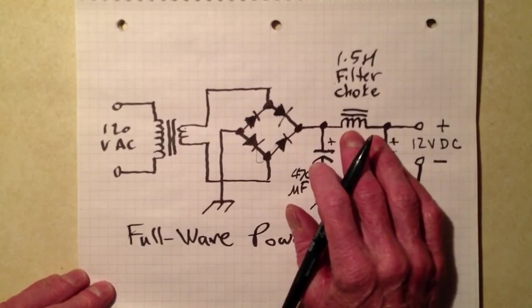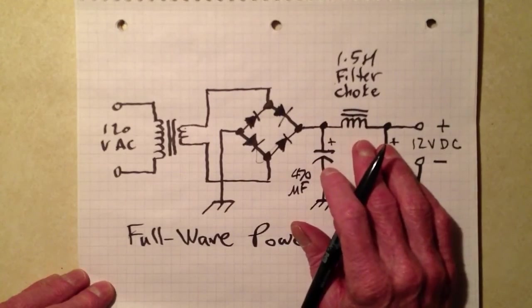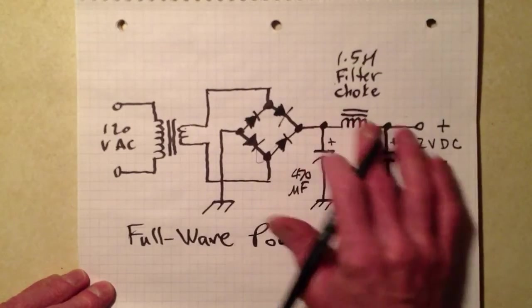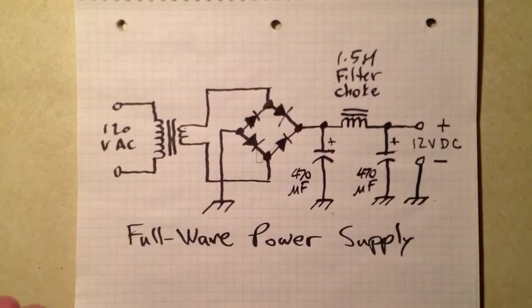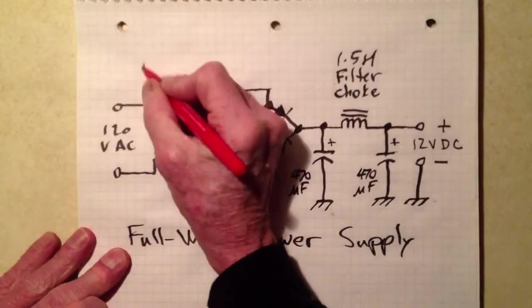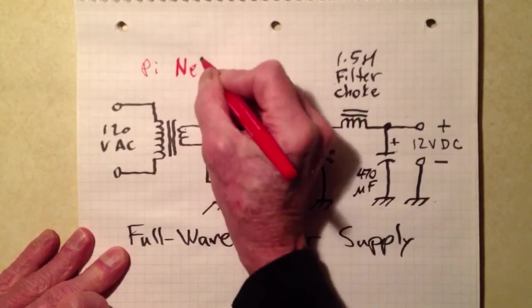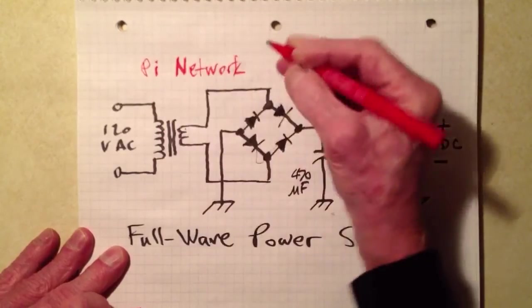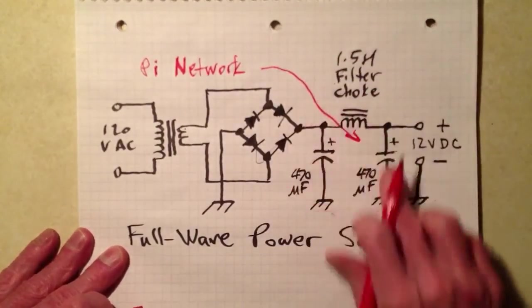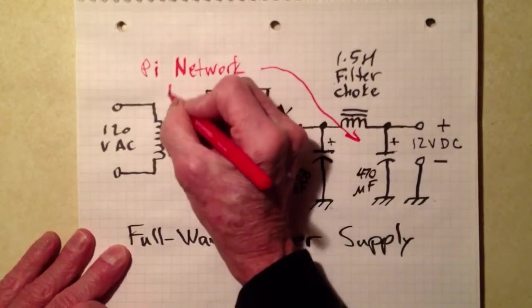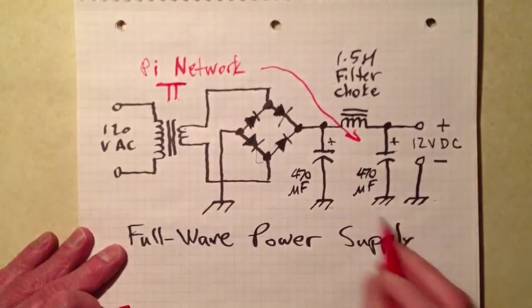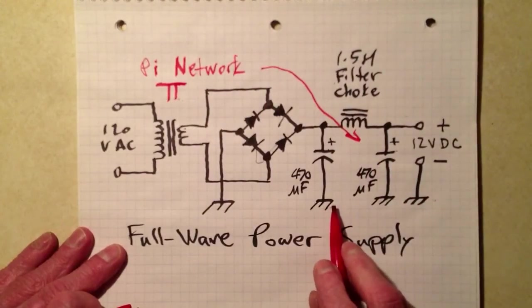And this filter choke, it literally, it's like a choke is like a low-pass filter. In fact, that's what this whole thing is. This is what you call a pi network. A pi network. Why do we call it a pi network? Because the components are arranged sort of like an uppercase, or even a lowercase Greek letter pi, like that. Pi network.